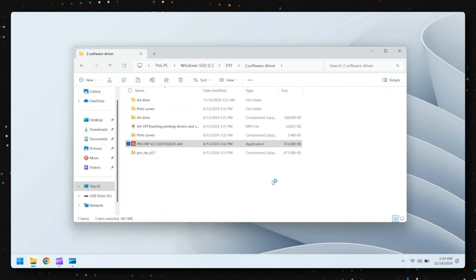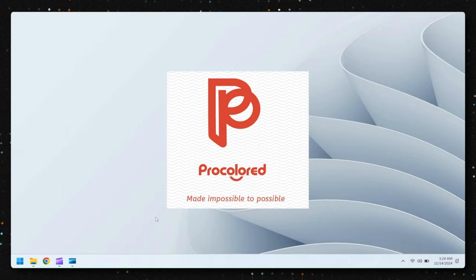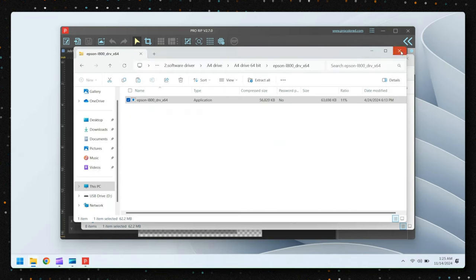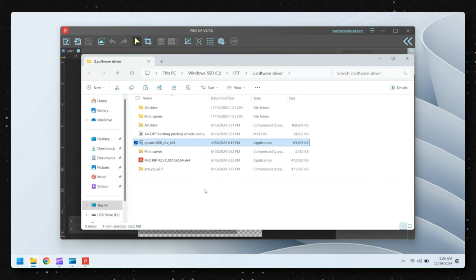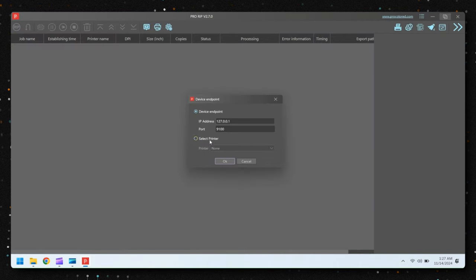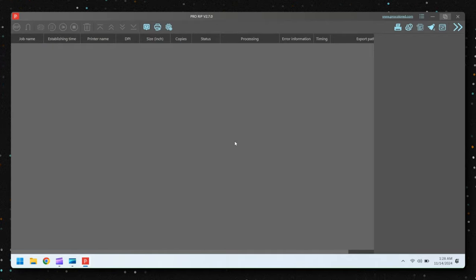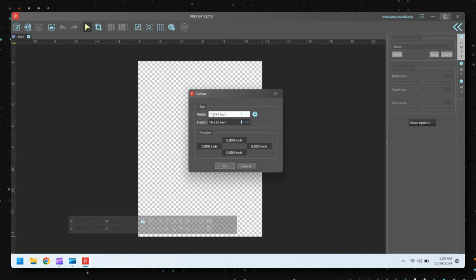Additionally, ProColored includes a dongle with your purchase. This dongle is essential as it activates your ProColored Pro RIP software. It will need to be connected to your computer whenever you're running the software. Think of it as your digital key to unlocking all the powerful features of the RIP program. The software installation process was quick and hassle-free. It took us about 15 minutes from start to finish, and once it was complete, we were ready to start creating. If you follow the included instructions, you'll be up and running in no time, ready to bring your designs to life.